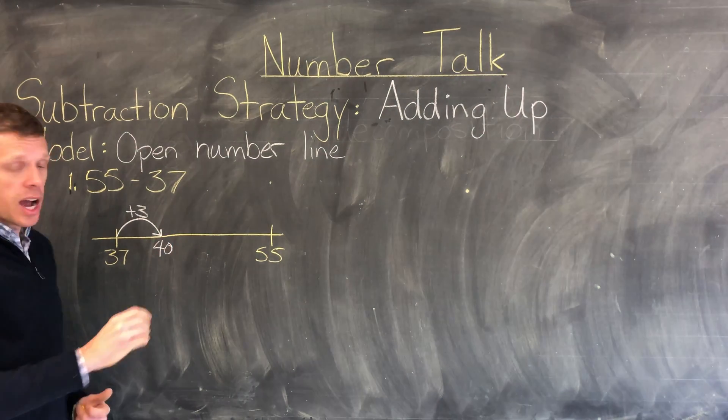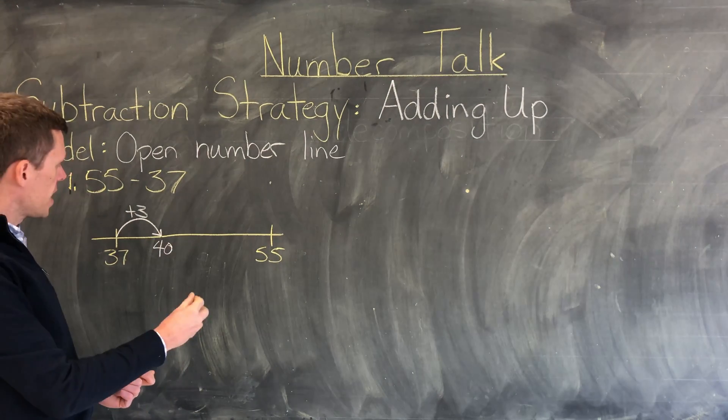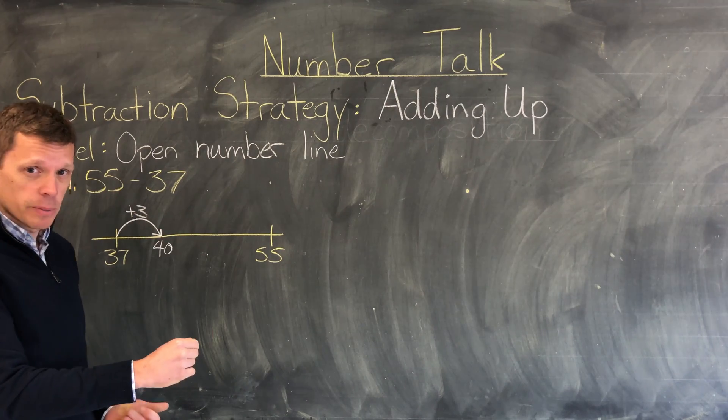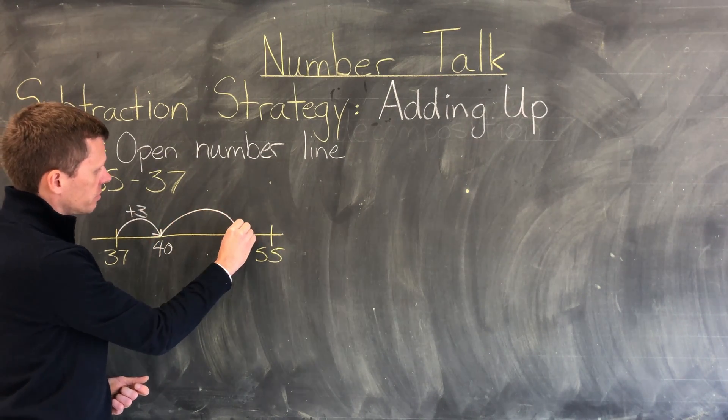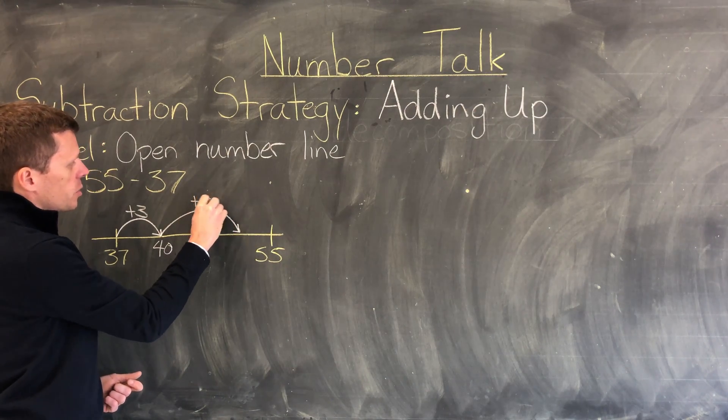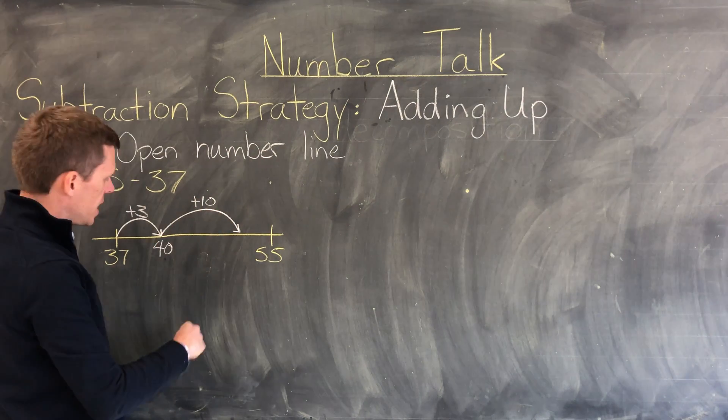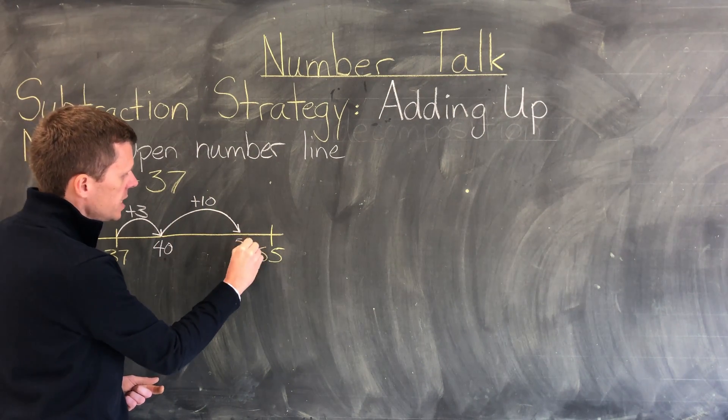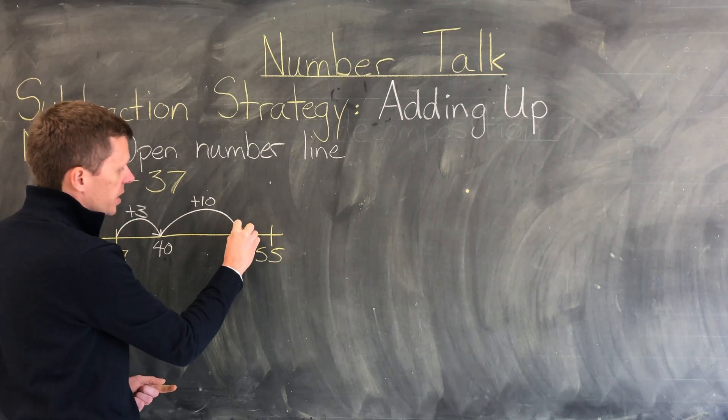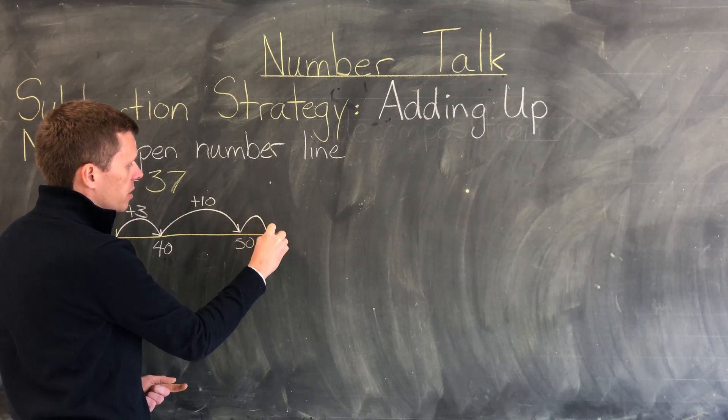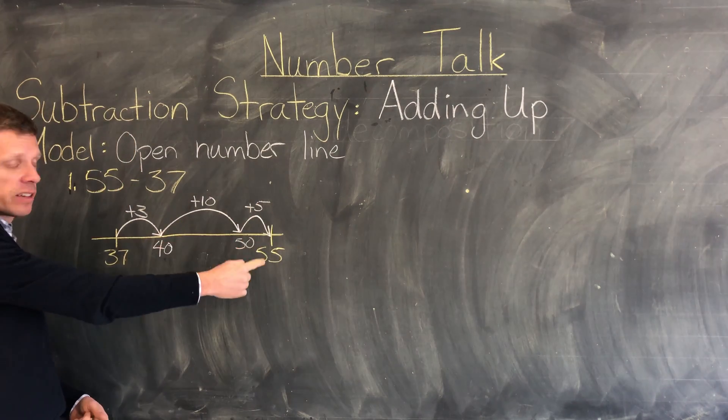Now from 40, I can make a bigger jump up to getting closer to 55. I'm going to make a jump, gets me to another friendly number, and I'm going to jump 10. So I'm going to write plus 10 above my jump to remind myself of what jump I made. 40 and a jump of 10 now gets me to 50, and as I can see now I'm only a small jump of 5 away. So another jump here of 5 gets me from 37 up to 55.